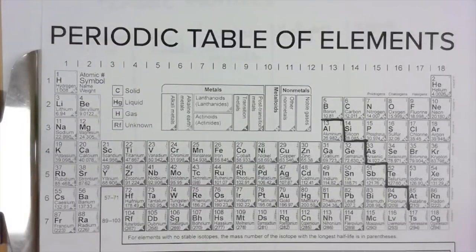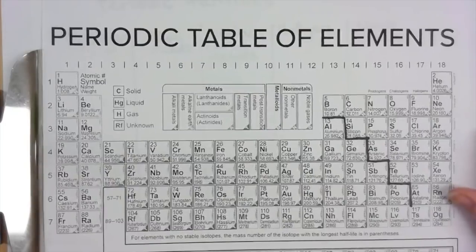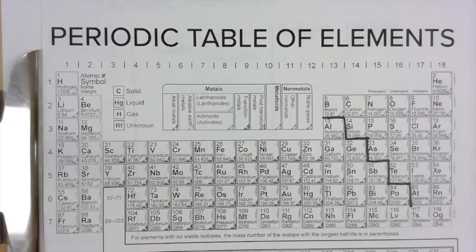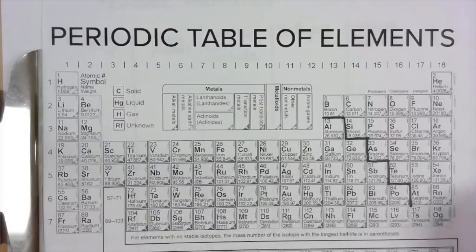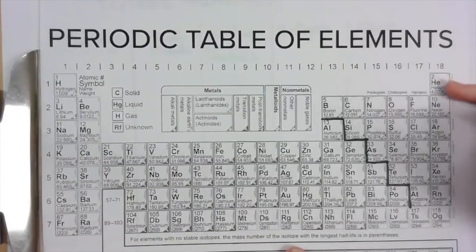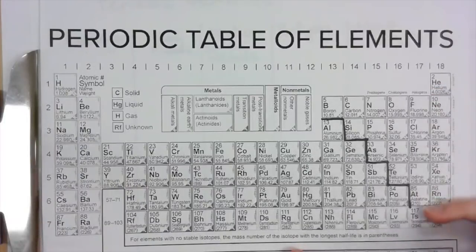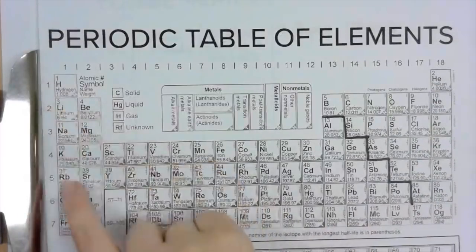Hey guys, this is the third video in our three-part series for our notes for unit three. For part three we're going to be talking about periodic families. I would go ahead and put this video and the keynote with your notes in it split screen so you can see both at the same time. We're going to start talking about the different families of the periodic table — and if you remember from the last video, your families are your vertical columns.